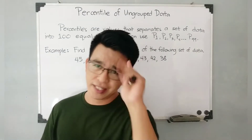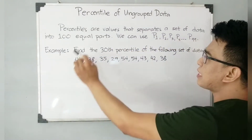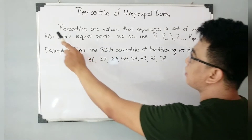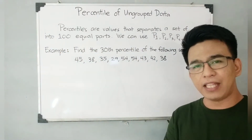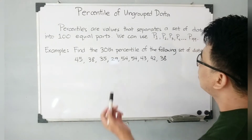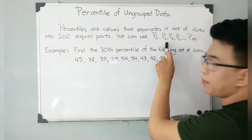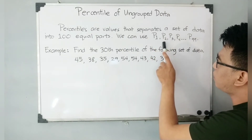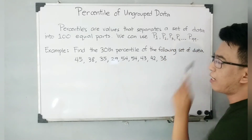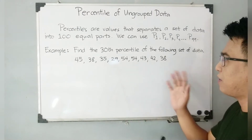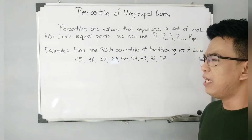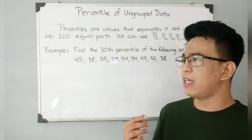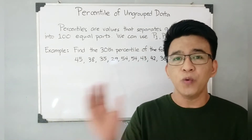So, without further ado, let's do this topic. When we define percentile, percentiles are values that separates a set of data into 100 equal parts. We can use P1, P2 — these are our percentiles: percentile 1, percentile 2, percentile 3, percentile 4, and percentile 99. These are the values that mahinahati yung ating given set of data into 100 equal parts. And here's a clarification: kailangan ba yung ating set of values ay mayroong 100 elements?